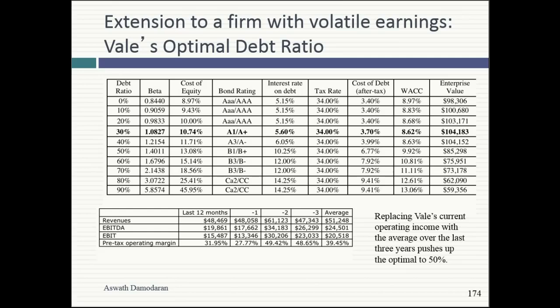The problem with that 10-year average was China. China has destroyed every single commodity graph. You look at oil, iron ore, any commodity — from 1890 through 2003 it's relatively flat, and then you have this China spike with 10 years where iron ore prices are suddenly at $100. The inflation-adjusted average oil price over the last 75 years is about $40 a barrel. If you think oil will bounce back to $80 or $100 or $120, your vision of average is being skewed by China.